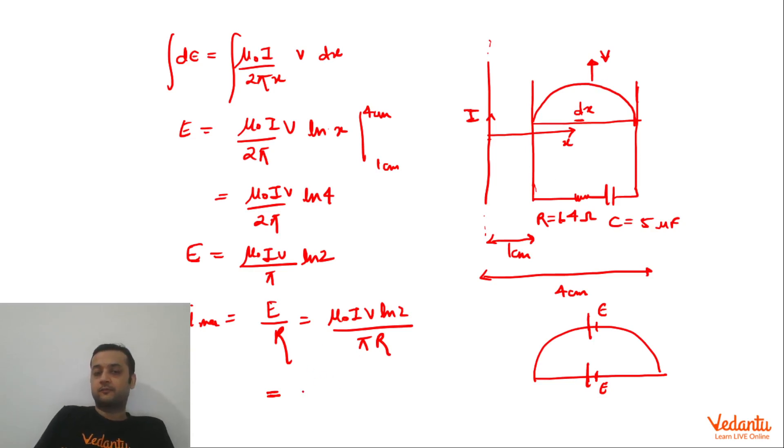Although in reality velocity should change if there is no external agent. So just put the value of mu0 which is 4 pi into 10 to the power minus 7. Value of I given in the question is 2 amperes. This I is the current flowing in the wire. Velocity at time 0 will be 3. ln 2 is 0.7 given in the question. Divide by pi into resistance 1.4.